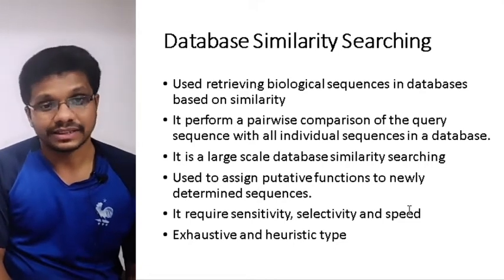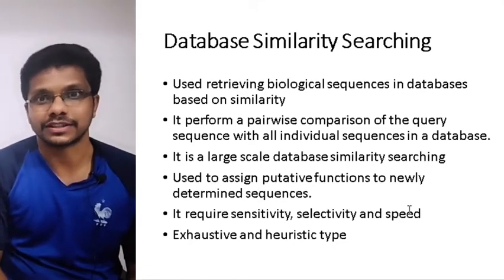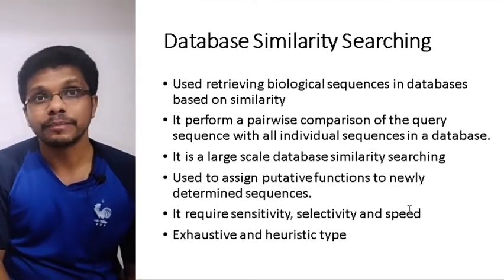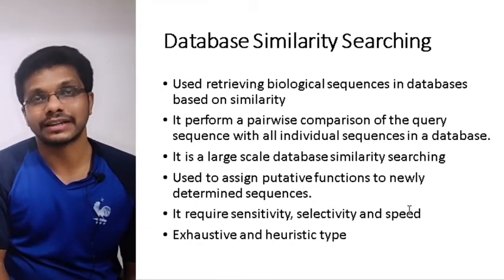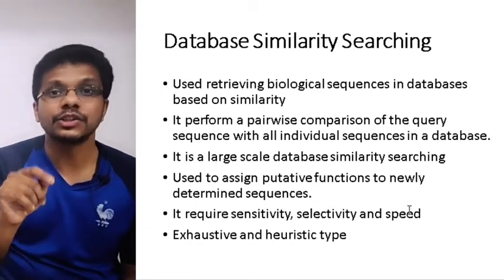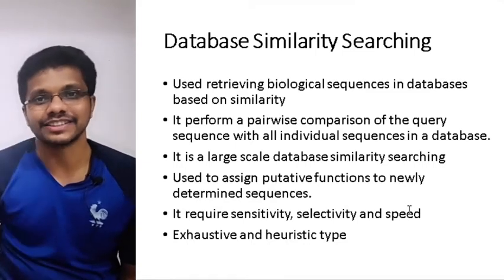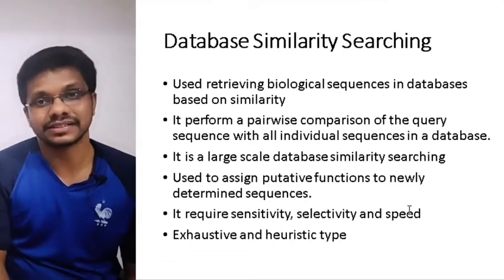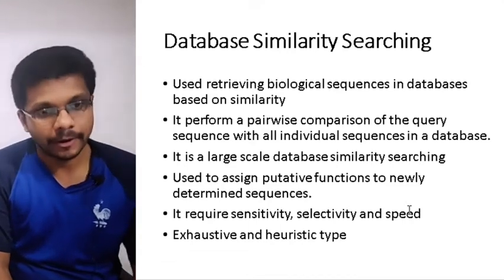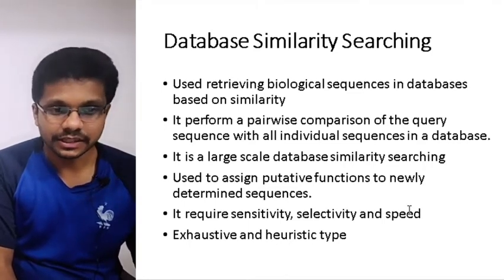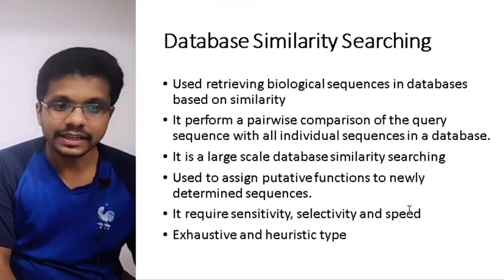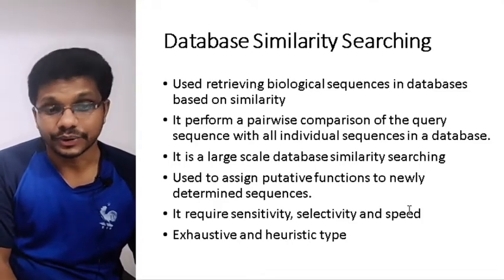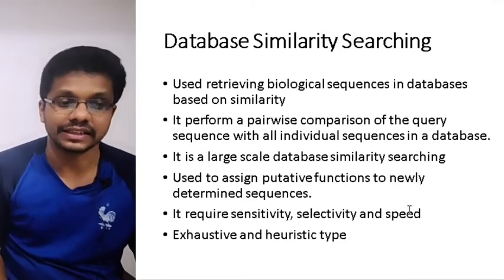These tools perform pairwise alignment with all their components. For example, in GenBank, a query nucleotide sequence of 100 base pairs is compared with 12 trillion base pairs in that database. This is a very computationally difficult task, but there are software and servers able to do it. This is called large-scale database similarity searching.